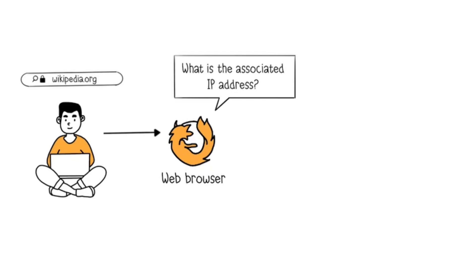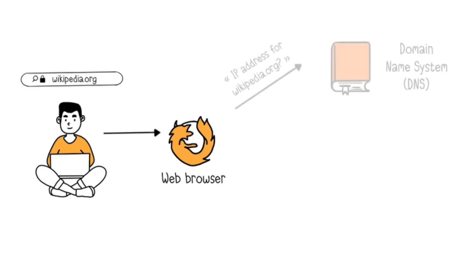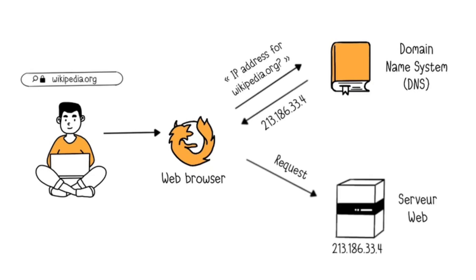However, your web browser still needs to find the IP address of the web server hosting the site to access it. For this, it relies on the Domain Name System, or DNS, to know the IP address associated with the corresponding domain name. And it's this IP address that allows the browser to know which web server to contact. The role of the DNS is simply to associate a domain name with an IP address.